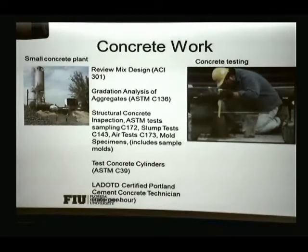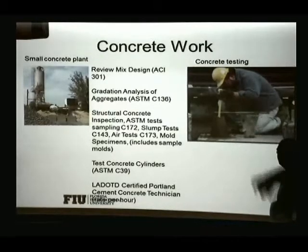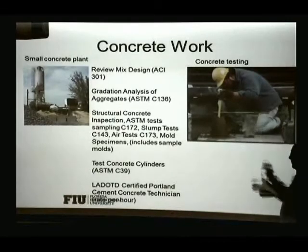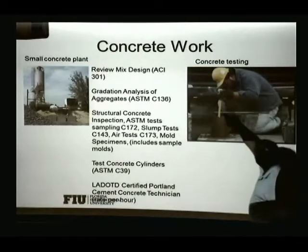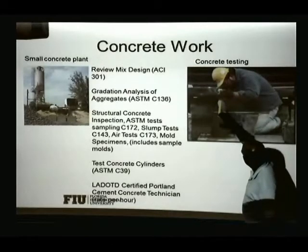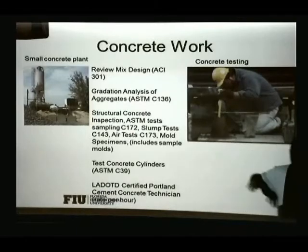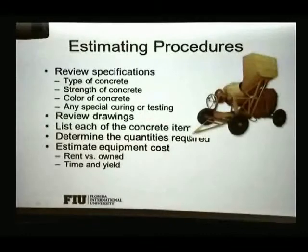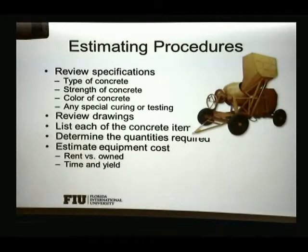Concrete testing includes the cone (slump) test, where they fill a cone, flip it upside down, and measure how much the concrete settles. That gives an early indication of strength. They also make small cylinders that get tested in the lab, giving a better estimate of the concrete's actual strength.